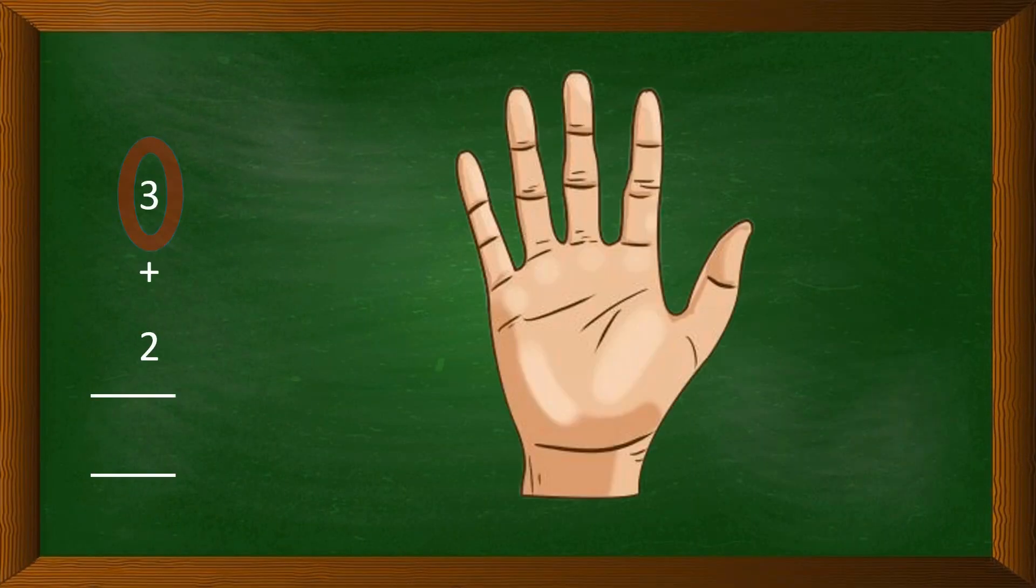So we will do 3 plus 2: 1, 2, 3, then 1, 2. Now count on your fingers. So the sum of 3 plus 2 is 5. We have done this with the help of our hand, kids. This is the exercise for you: do 4 plus 7, kids.